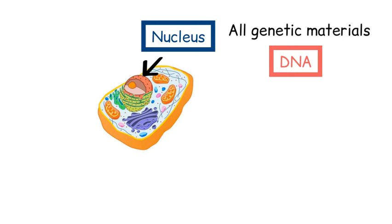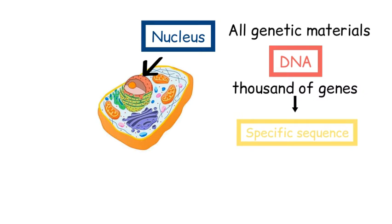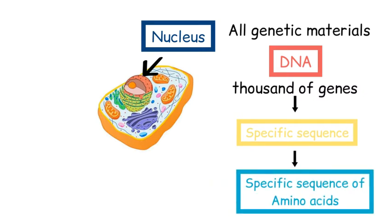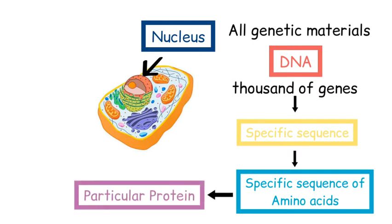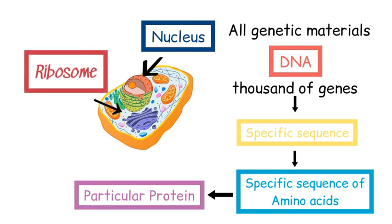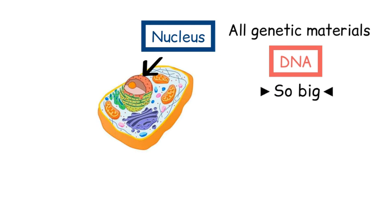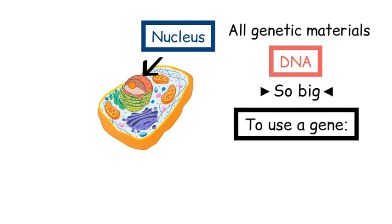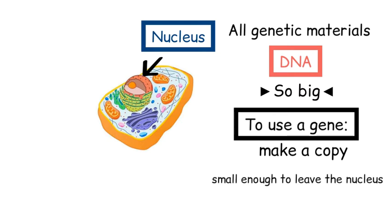The reason we say DNA is so essential to life and controls what the cells do is because it contains thousands of genes, which are small sections of DNA that have specific bases and are able to code for a specific sequence of amino acids, which when combined will form a particular protein. In order to actually make a protein, the specific sequence of bases has to be read by structures called ribosomes, which are outside of the nucleus. However, because the DNA is so big, it can't leave the nucleus itself. So if we want to use a gene to make a protein, we're going to have to make a copy of that gene first. And because we're only copying a single gene rather than the entire DNA strand, the copy will be small enough to leave the nucleus and make its way to the ribosome.